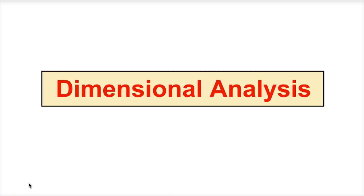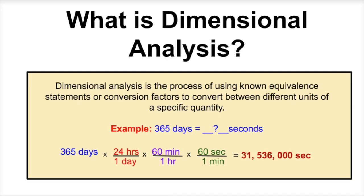Hey you guys, this is Mr. Millings and today we're going to learn about dimensional analysis. So what is dimensional analysis and how does it work? Dimensional analysis is the process of using known equivalent statements or conversion factors to convert between different units of a specific quantity. Let's take a look at an example and apply what this meaning of dimensional analysis means.